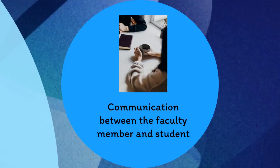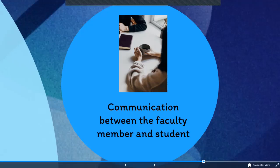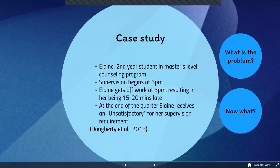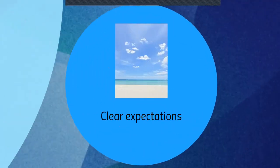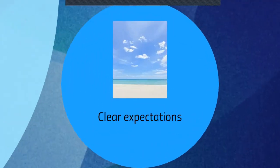This could be an example of having clear expectations, informed consent to the student, writing this all down, documenting, and signing it — a proactive approach to student development. What initially happened — her being late and receiving an unsatisfactory — was reactive. They responded to the behavior instead of addressing things at the very beginning to prevent it.